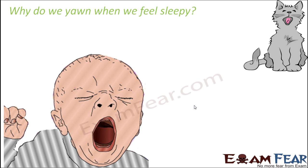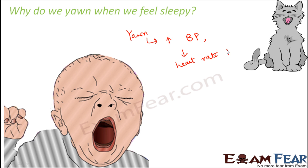There are many theories about why we yawn. One theory relates to the circulatory system: when we yawn, it causes an increase in blood pressure. When blood pressure increases, heart rate also increases, which causes blood circulation to increase, which in turn increases the oxygen supply in the blood.